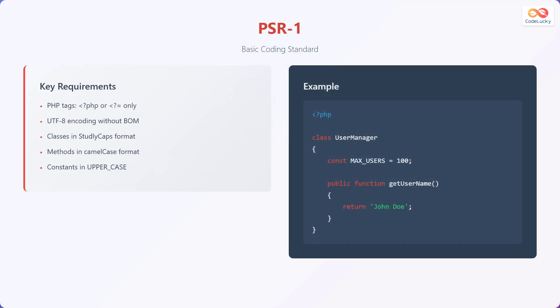Now let's explore PSR1, the basic coding standard. This standard outlines key requirements for PHP code. It mandates the use of PHP tags — specifically the standard PHP tag or the short echo tag only. It also emphasizes UTF-8 encoding without a byte order mark, and specifies that classes should be named using the StudlyCaps format, methods should follow the CamelCase format, and constants should be uppercase with underscores separating words.